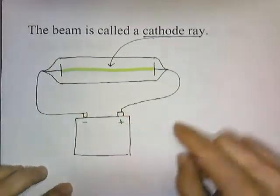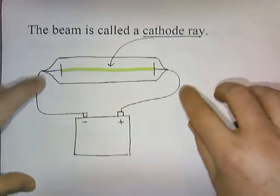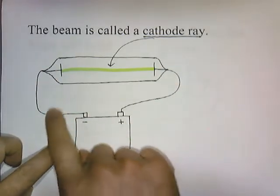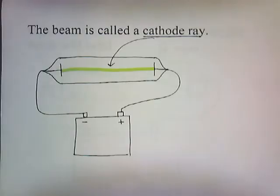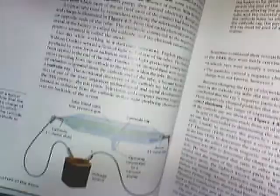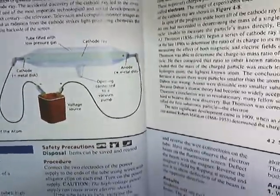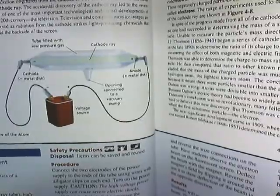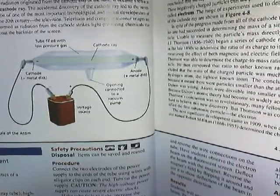Here's our glass tube, and at the end of it are these two little metal plates. At the end of the plates you attach a battery, and when you turn it on, a beam appears. There's a better illustration probably in your textbook — here's one from one textbook. You can see the glass tube attached to a battery, and the little green beam in the middle is the cathode ray.